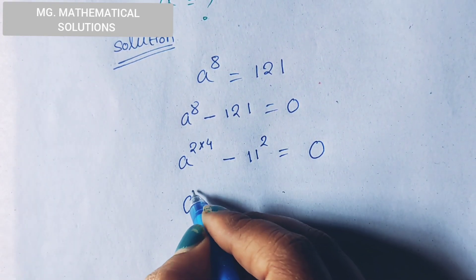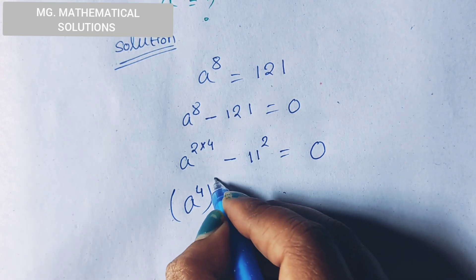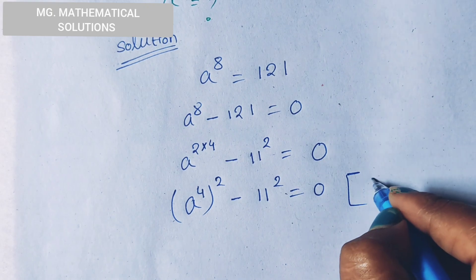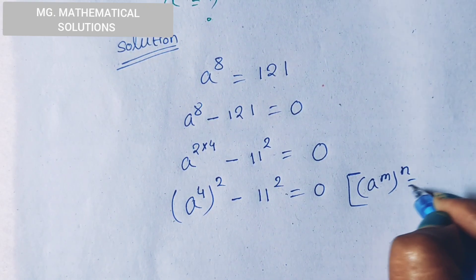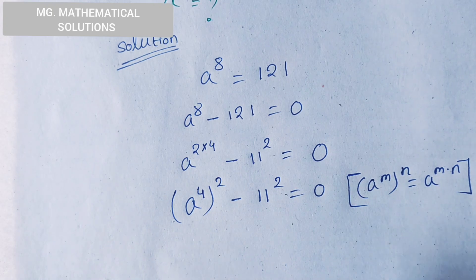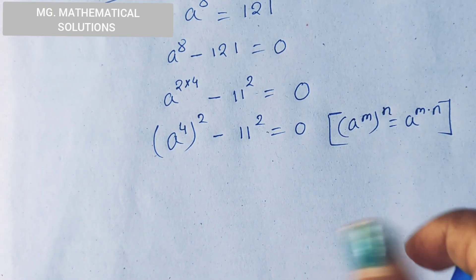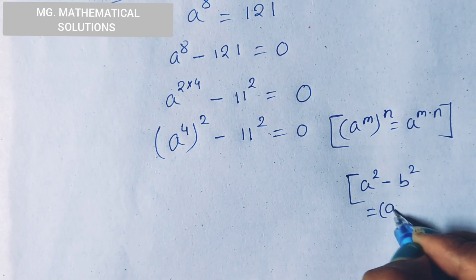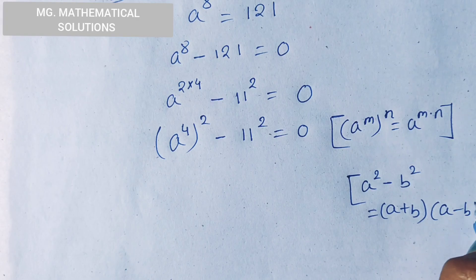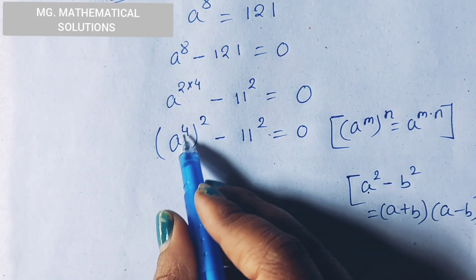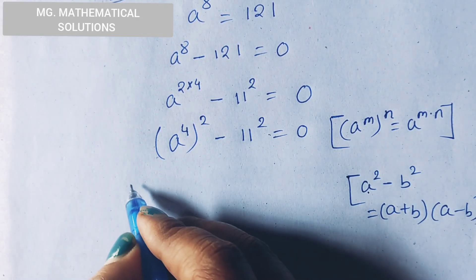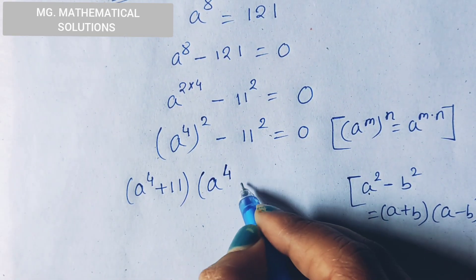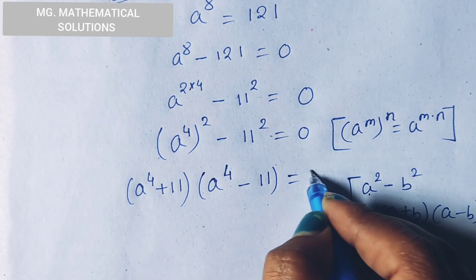Now we write this term as: a to the power 4, whole to the power 2, minus 11 squared, equal to 0. Here we use the formula: a to the power m, whole to the power n, equal to a to the power m times n. Now we use the formula a squared minus b squared equal to a plus b, whole into a minus b. Here a means a to the power 4 and b means 11. So: a to the power 4 plus 11, whole into a to the power 4 minus 11, equal to 0.